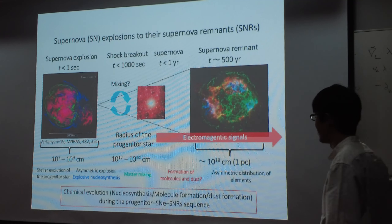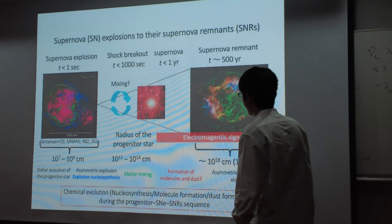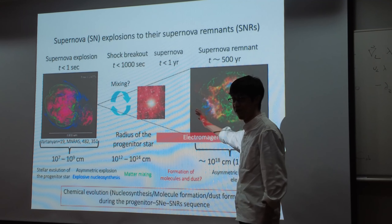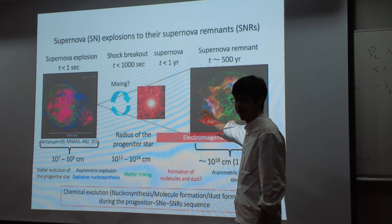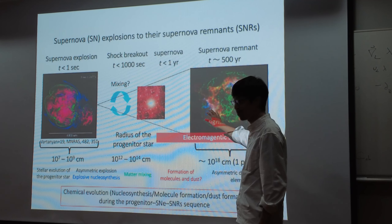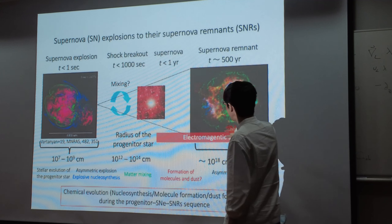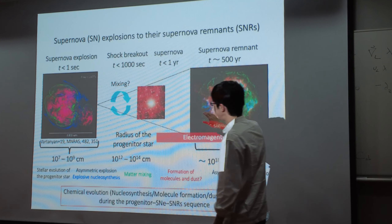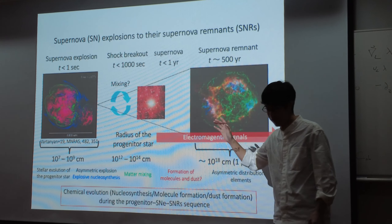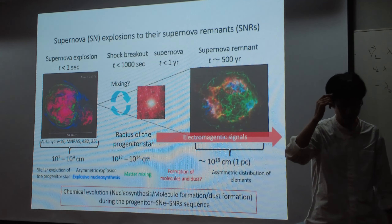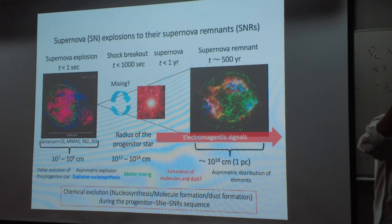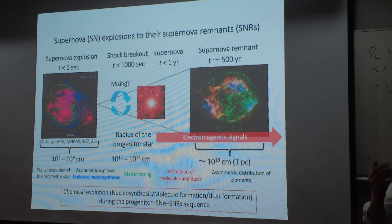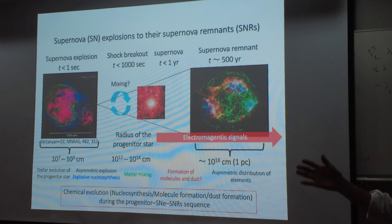We use realistic stellar evolution models as input and perform three-dimensional hydrodynamics for the core-collapse supernova. The further evolution can then be followed using this result by collaborators using their simulation code. Not only do we run simulations, but we also try to estimate observables — for example, optical light curves and X-ray emission during the supernova remnant phase. By connecting this sequence, we may say something about the properties of the neutron star and the progenitor star, or about the core-collapse supernova mechanism.